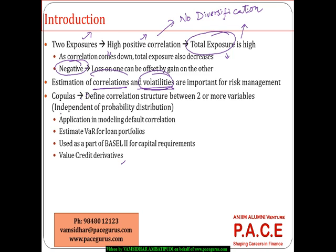The same extension will be done to the world of copulas, especially to define the correlation structure even when the underlying probability distribution of the variables is not known. Even when the distribution of the underlying variables is not normal or not known, by mapping it to some known copula distribution, we can estimate the correlation structures.